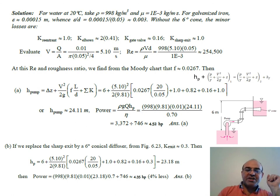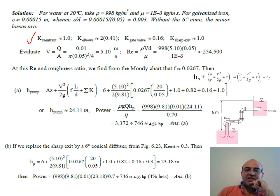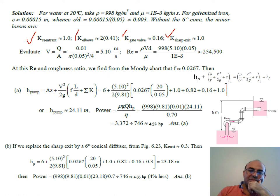We need K factors for each component. The re-entrant entrance: K = 1 (zero thickness, large L/D from the curve). K for the elbows is found from the table. Gate valve K from the table. Sharp exit K = 1. We also find velocity from Q and tube diameter, then Reynolds number. The flow is turbulent at Re = 254,000.